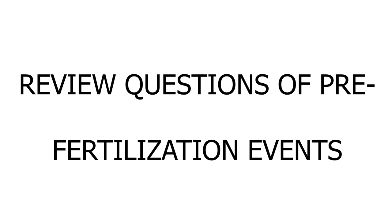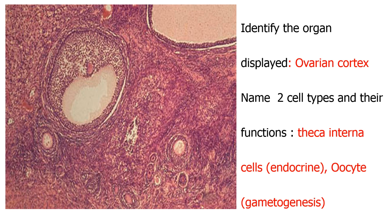Now let's have some review questions and summarize these pre-fertilization events. You can be asked to identify the organ — remember this is the ovary, specifically within the ovarian cortex, where you have a series of follicles at different levels: primordial, primary, secondary, and mature follicles. The mature follicle has a large follicular antrum.